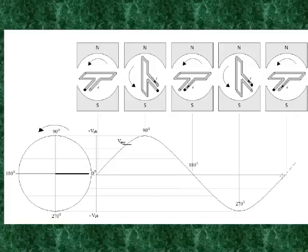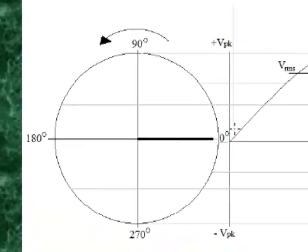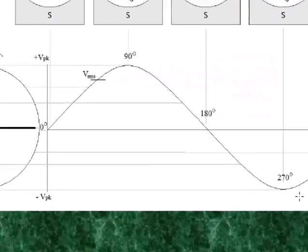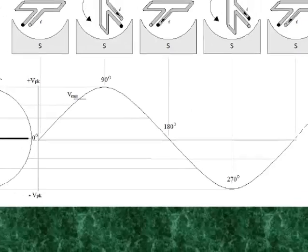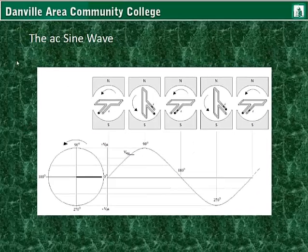The faster it turns, the more of these cycles will occur in one second. Ideally, if this coil is turned at a rate of 3,600 RPM, it will generate 60 hertz — that is, 60 of these cycles per second. That is the frequency of the AC voltage in our grid.